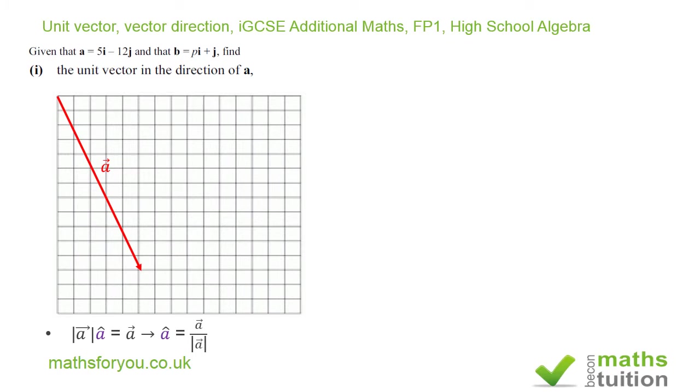So a hat, which is a unit vector, is equal to vector a divided by the magnitude. Now firstly we should find the magnitude of vector a.